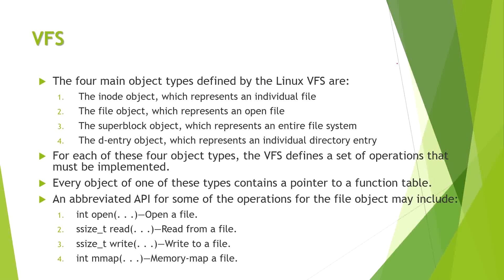For each of these four object types, the VFS defines a set of operations called via an API with certain parameters. The parameters include: open to open a file, ssize_t read to read a file, ssize_t write to write to a file, and mmap to get a memory map of a file.